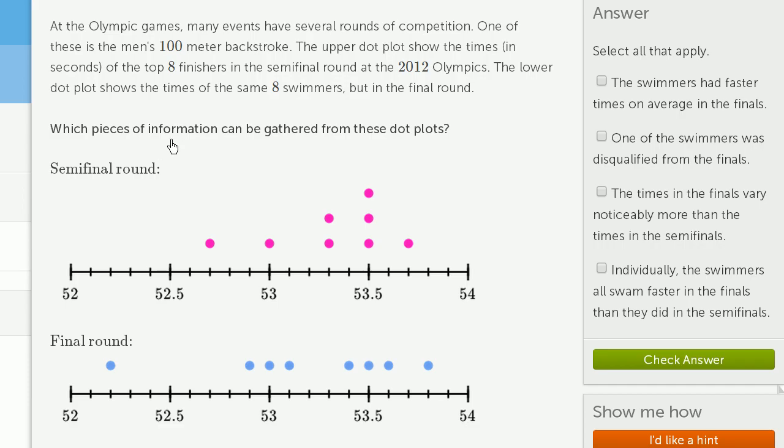Which pieces of information can be gathered from these dot plots? In the semifinal round, we see that these are the eight times of the eight swimmers. We see three swimmers finished in exactly 53.5 seconds. One swimmer finished in 53.7 seconds right here, and one swimmer right over here finished in 52.7 seconds. We can think about similar things for each of these dots.